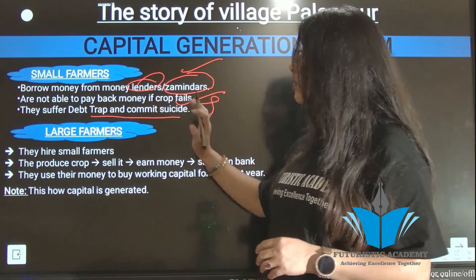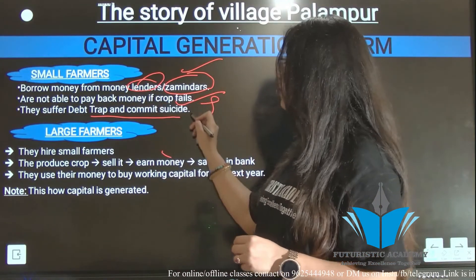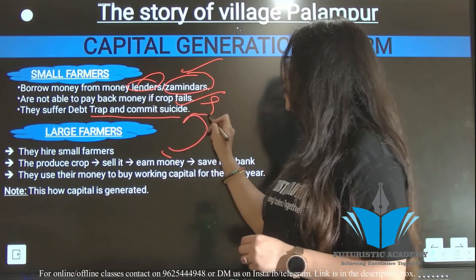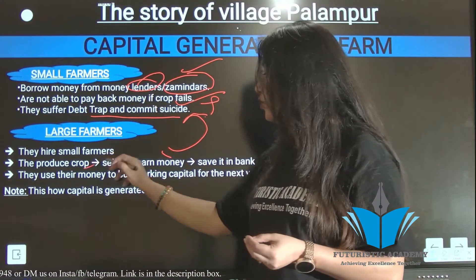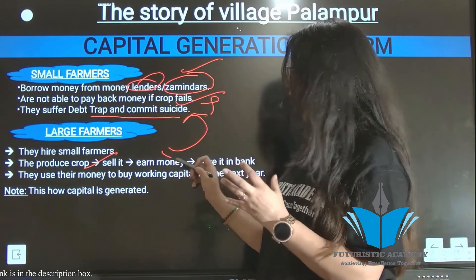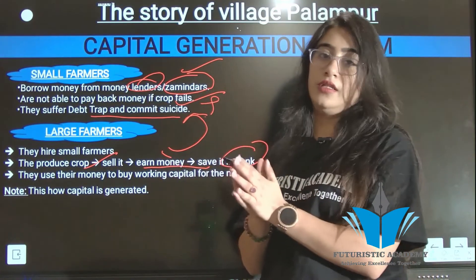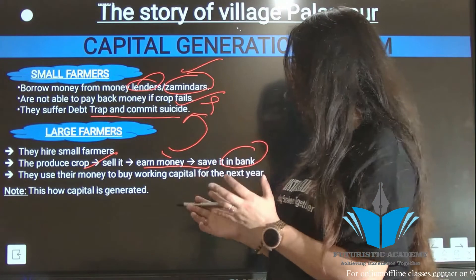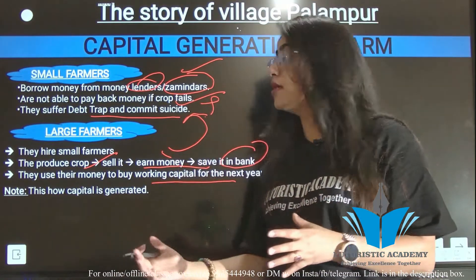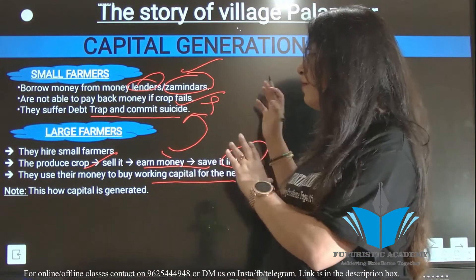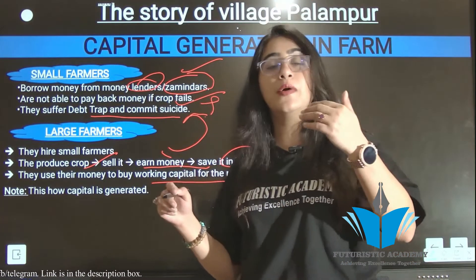Large farmers, on the other hand, hire small farmers to work on their land. They produce crops, sell them, and save the money in the bank. That saved money is then used as working capital to fund the next farming season. This is how capital is generated and sustained on large farms in Palampur.